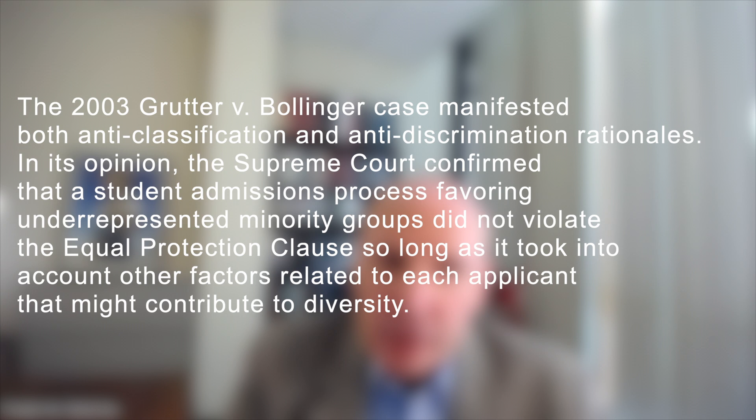Grutter manifested both of these anti-classification and anti-subordination rationales. The anti-classification measure was the general suspicion or skepticism of race, and the anti-subordination rationale permitted the use of race as a temporary measure to ensure minority access to elite institutions of higher education and all the advantages that come with that. So racial and ethnic diversity in higher education was legitimized in 2003 as a compelling governmental interest that justified the use of race as a temporary measure to ensure minority access to elite higher education.